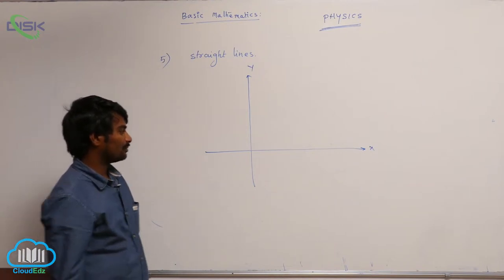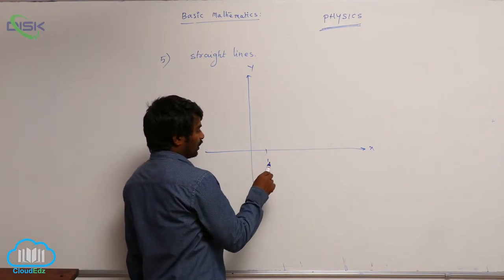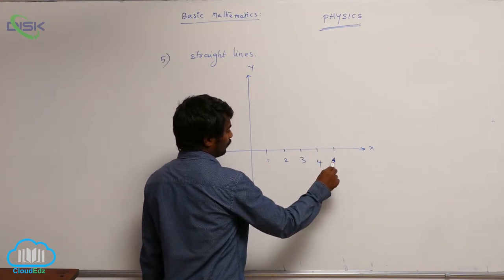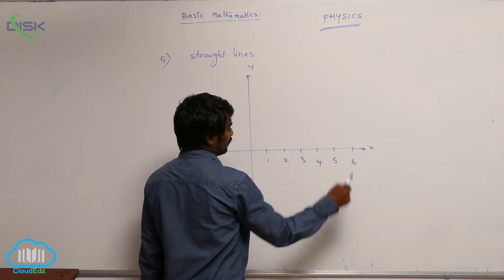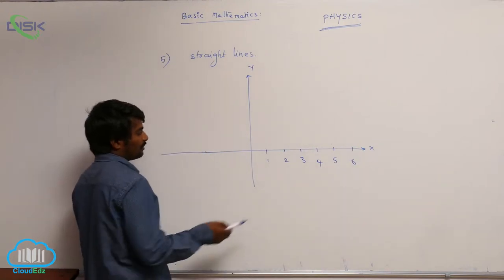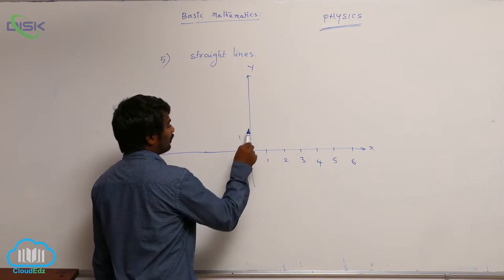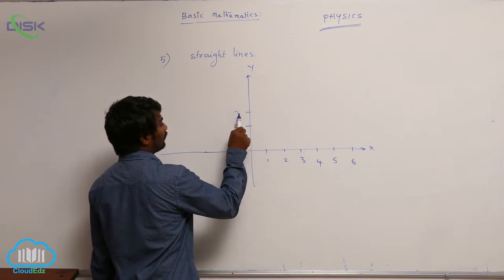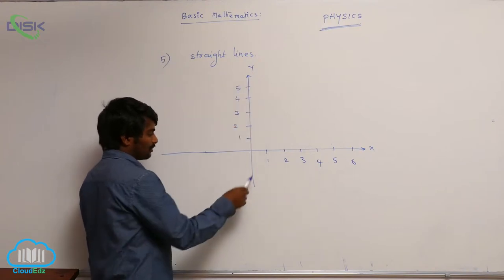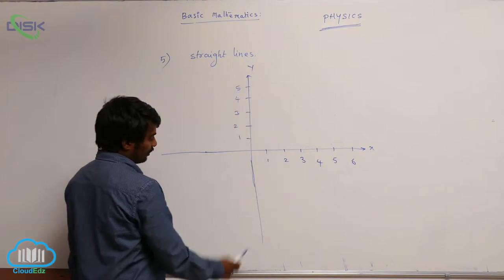1, 2, 3, 4, 5, 6 - these are x-values. You can take negative values on negative axis. Here 1, 2, 3, 4, 5 - y-values. You can take negative values on negative y-axis.